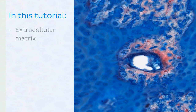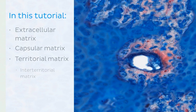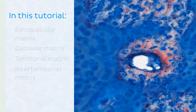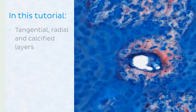In addition, we will also discuss the extracellular matrix, the capsular matrix, the territorial matrix, the interterritorial matrix, the tangential, radial, and calcified layers. And finally we will end this tutorial by discussing a clinical disorder associated with hyaline cartilage which is known as osteoarthritis.